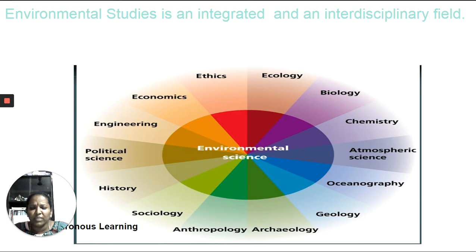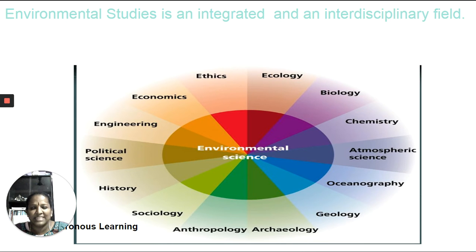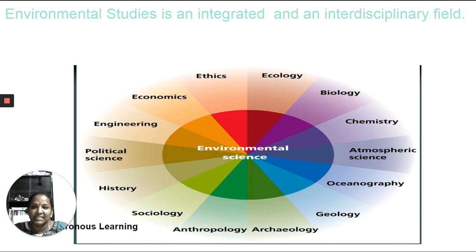In biology, we look at how certain species of organisms survive in specific environments. For example, the camel — the ship of the desert — survives in harsh, arid conditions, while the polar bear survives in cold polar regions. Both have adapted themselves to their surroundings. Even plants in desert regions have modified stems or modified leaves that allow them to survive harsh conditions. This adaptation to a particular environment is part of biology.